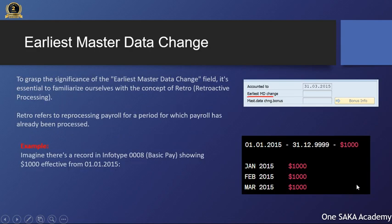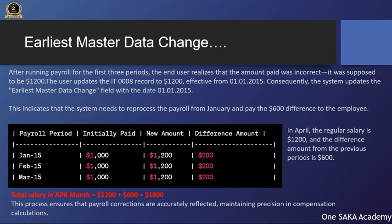Let's explore the 'Earliest Master Data Change' field. To grasp its significance, it's essential to familiarize ourselves with the concept of retroactive processing. Retro refers to reprocessing payroll for a period for which payroll has already been processed. For example, imagine there's a record in infotype 0008 (basic pay) showing $1,000 effective from the 1st of January 2015. After running payroll for the first three periods, the end user realizes the amount paid was incorrect — it was supposed to be $1,200. The user updates the IT0008 record to $1,200 effective from the 1st of January 2015. Consequently, the system updates the earliest master data change field with the date the 1st of January 2015, indicating that the system needs to reprocess the payroll from January and pay the $600 difference to the employee.